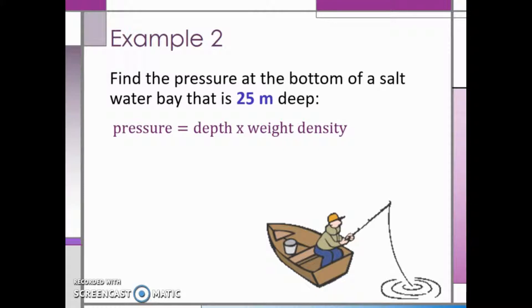The weight density we will need to find from the table again. But this time we need to use the metric weight density for salt water, which is 10,045 newtons per cubic meter. When we multiply, we end up with 251,125 pascals.